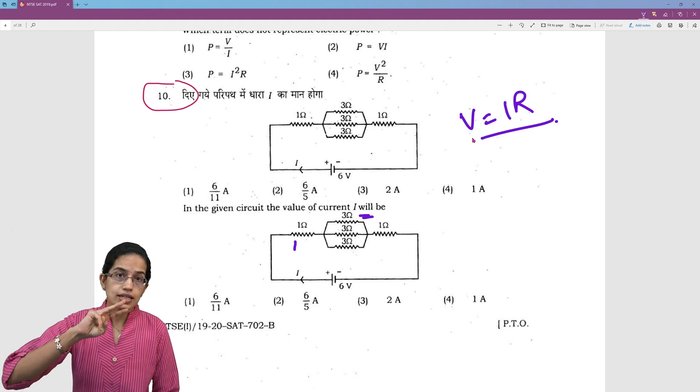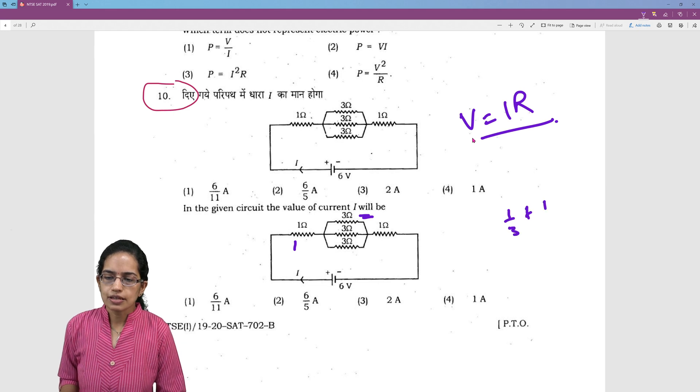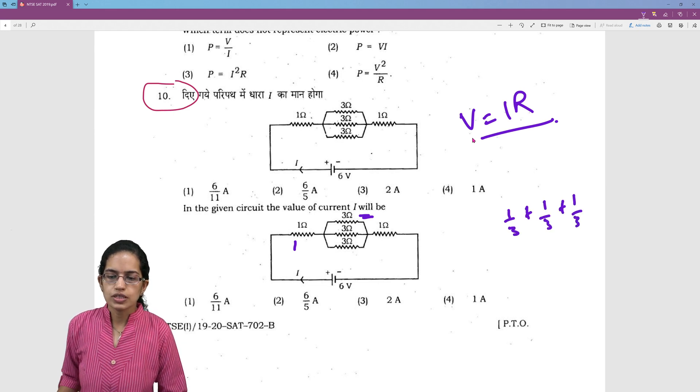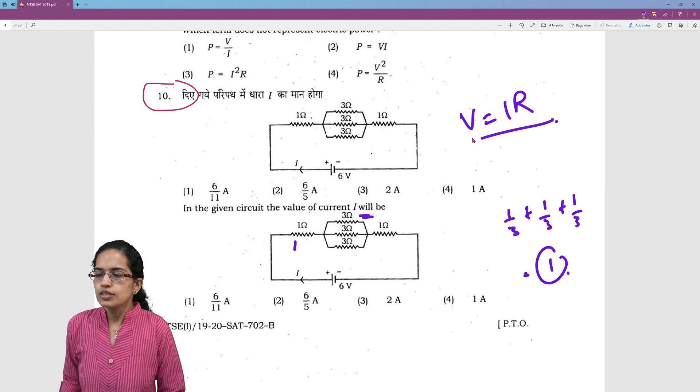Then 3 resistances in parallel. So it is 1 by 3 plus 1 by 3 plus 1 by 3 inverse of that. So that becomes 1. And then 1,